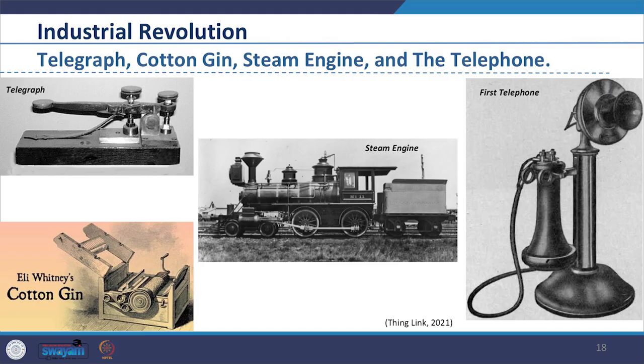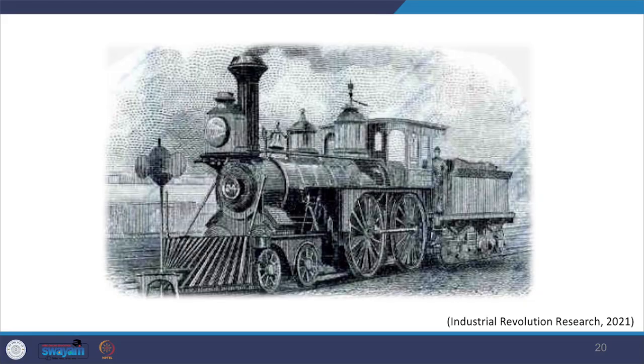The Industrial Revolution brought new interventions according to the time. Machines transformed to larger machineries. Some key examples include the telegraph, cotton gin, steam engine and the telephone. These inventions and technology improvements brought evolutionary changes through time. For example, the invention of the steam engine improved transportation drastically by time and scale.